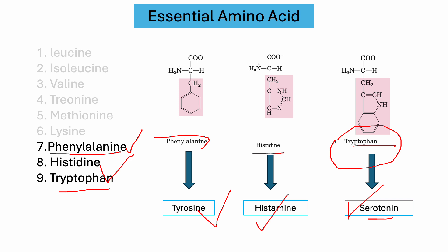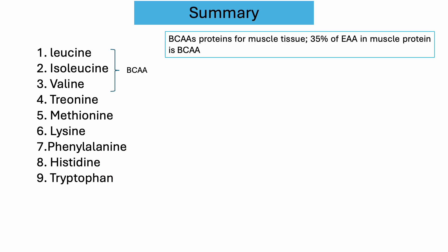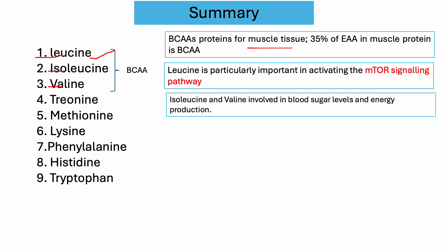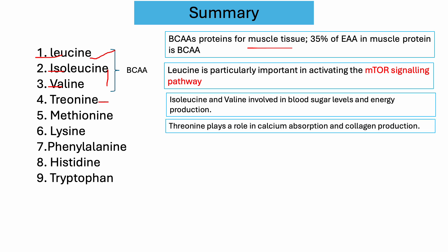Let's summarize today's lecture. In humans, nine out of the 20–22 proteinogenic amino acids are known as essential amino acids. Among these nine, leucine, isoleucine, and valine are known as branched-chain amino acids, which can contribute 35% of the essential amino acids responsible for muscle protein production. Among these, leucine is very important for activating the mTOR signaling pathway, while isoleucine and valine are important for blood sugar level control and energy production. Threonine plays a vital role in calcium absorption and collagen production.